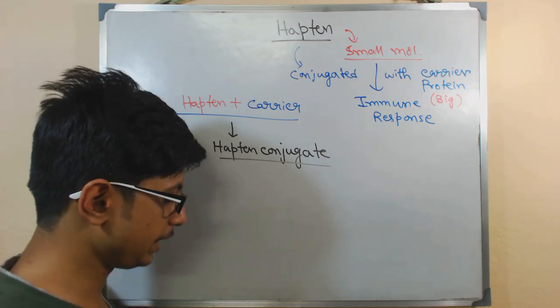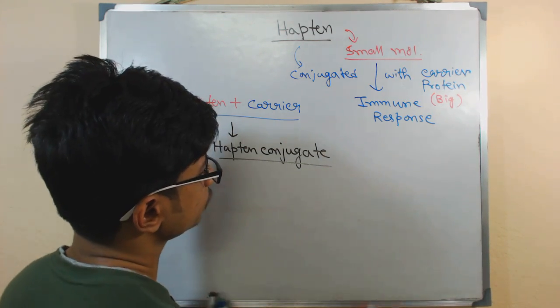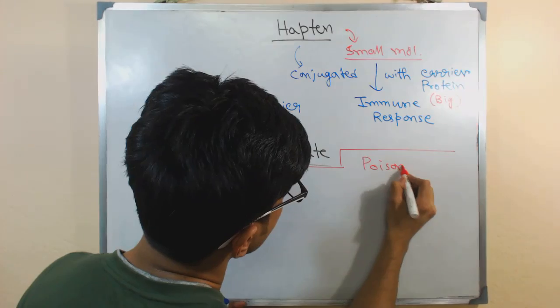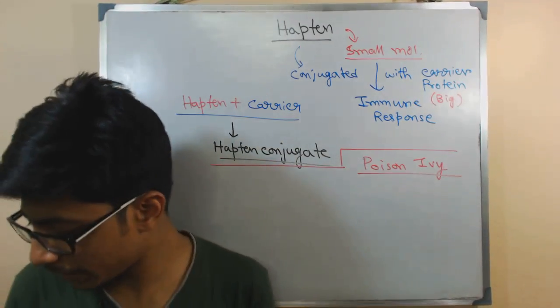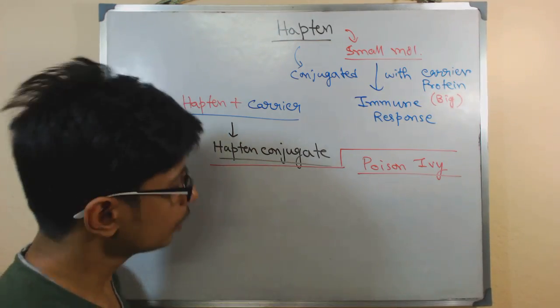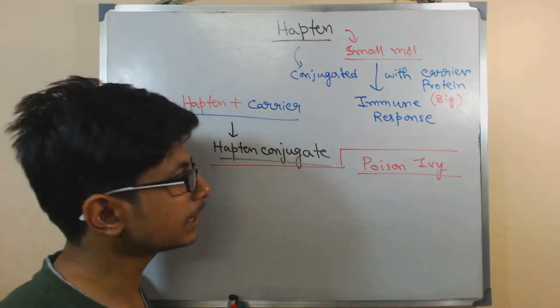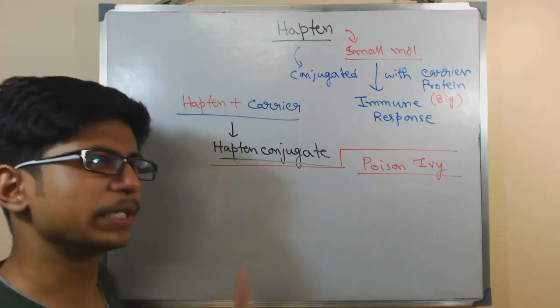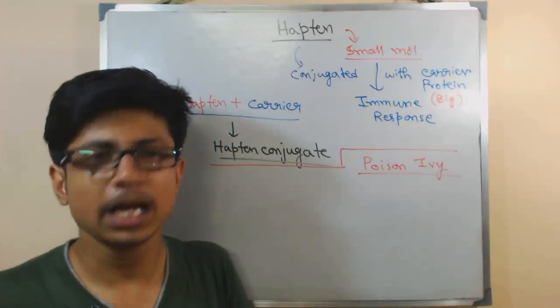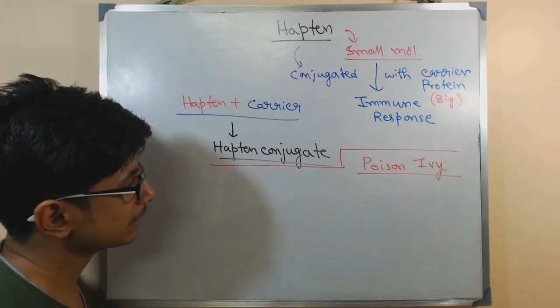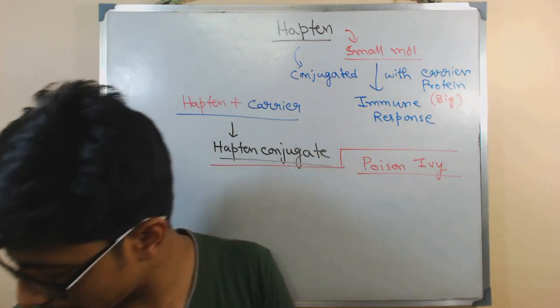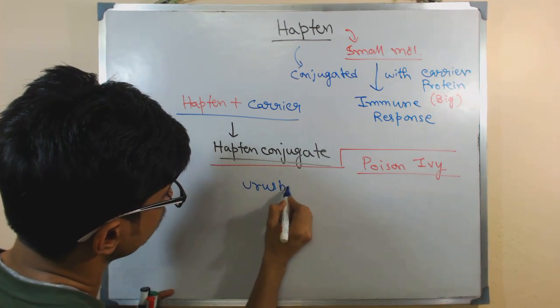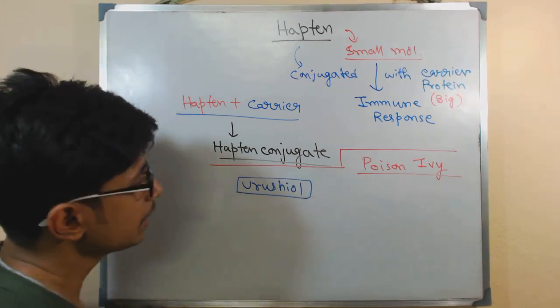Now one example for this hapten is the example of poison ivy. So if you look at here, poison ivy. We all know what poison ivy is. Poison ivy is a tree. So in this poison ivy, they have the leaf and all these things and those leaves contain a chemical molecule that is kind of a hapten in nature. That is immunogenic, that means it develops an immunological response. So the name of this is urushiol. This is urushiol.